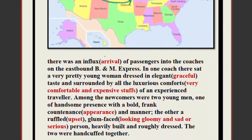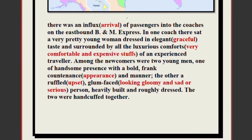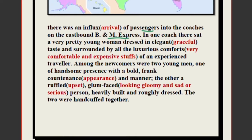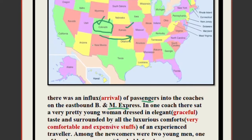There was an influx — meaning a large number of passengers — at the stop. Whenever a train stops, a number of people get down and a number get inside. There was an influx of passengers into the coaches of the eastbound B&M Express. That is the name of the train; it was going towards the east.